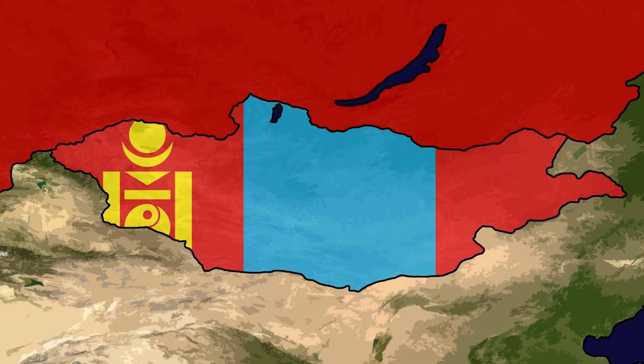Mongolia was the only country that remained as an observer of the alliance throughout the entire Cold War but never joined.